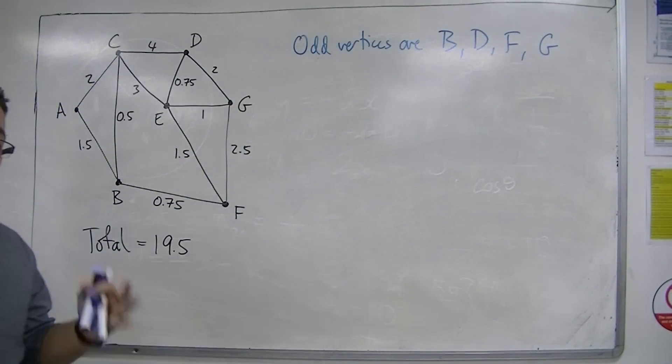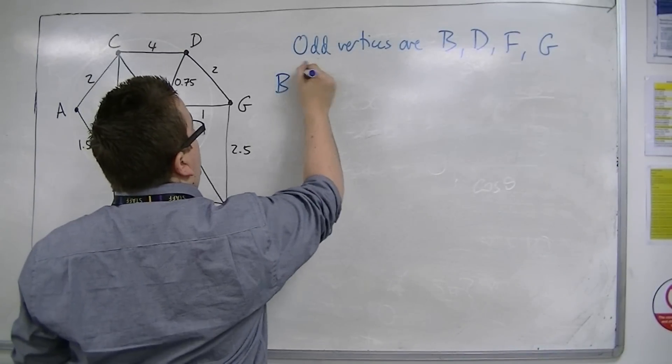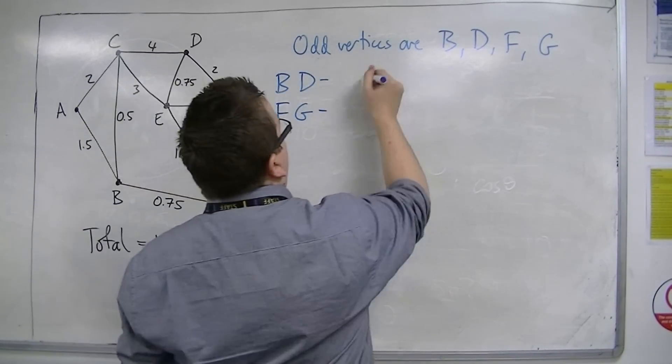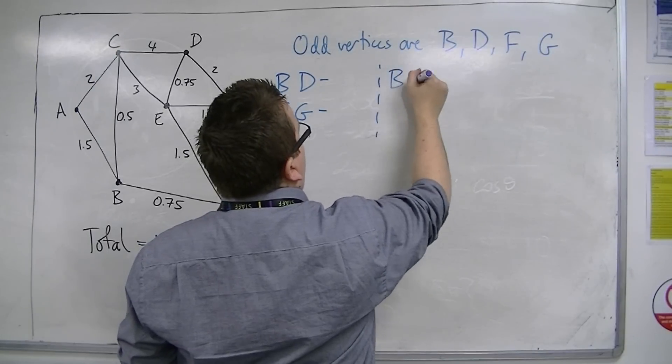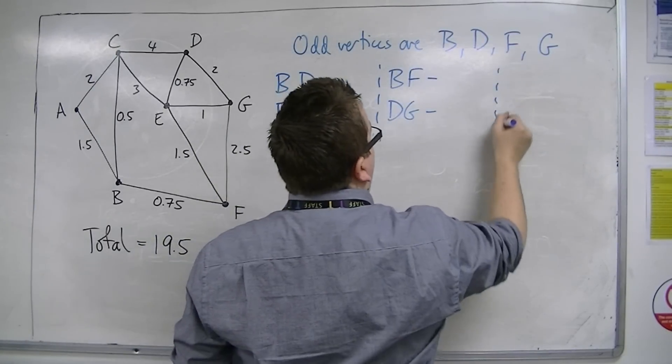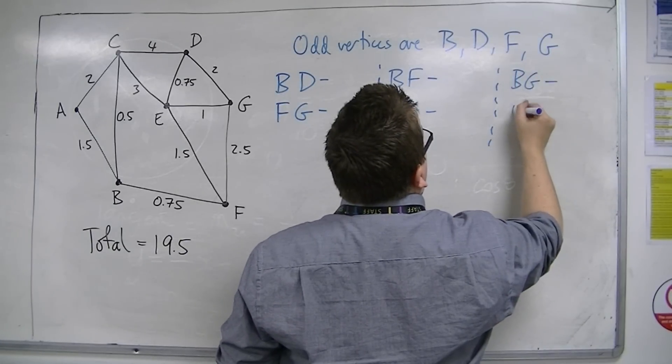We then pair the odd vertices up. So we're going to have B and D, we're going to have F and G, so they're going to be pairs. Then we're going to have B and F, and D and G, they're going to be pairs. And then finally, B and G, and D and F.